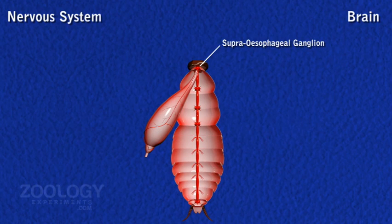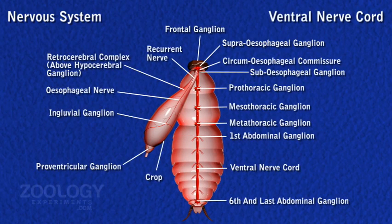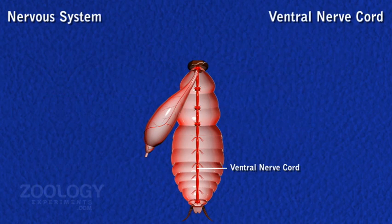The remaining three pairs of ganglia of the head fuse to form the sub-esophageal ganglion, which lies below the esophagus. Brain and sub-esophageal ganglion are connected together on either side of the esophagus by a circumpharyngeal commissure. Ventral nerve cord arises from the sub-esophageal ganglion and runs posteriorly as a double ventral nerve cord along the mid-ventral line of thorax and abdomen.